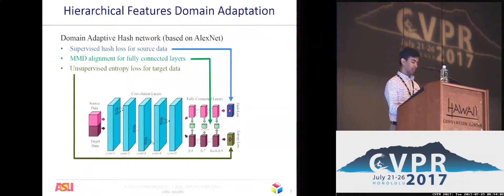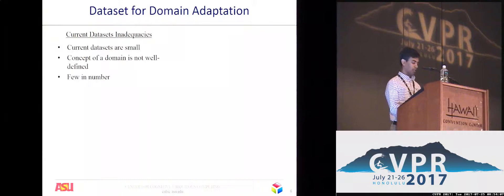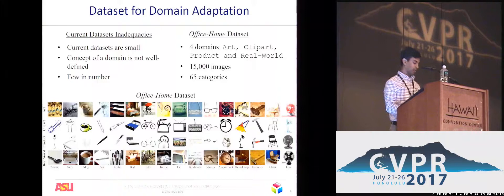One of the contributions of our work is also a dataset for domain adaptation. There is a need for new datasets in domain adaptation. We therefore introduce the Office-Home dataset containing images of everyday objects. It has four domains: artistic images, clip art images, product-like images without a background, and real world images with a background. There are 65 categories in all with nearly 15,000 images.